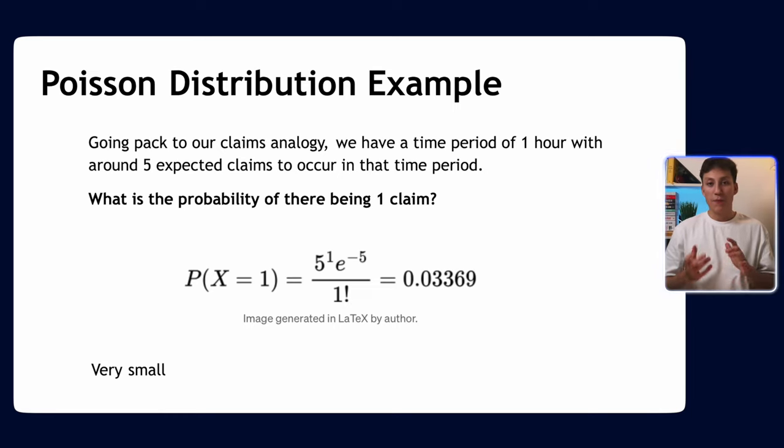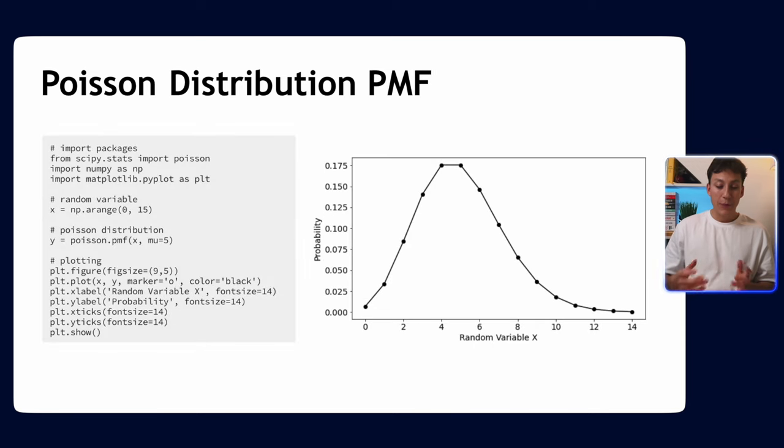Given we have a mean rate of five, to only get one is very unlikely. That's what the Poisson distribution is saying—how likely is a certain number of events going to happen if we know it happens with a mean rate. That's the main gist of the Poisson distribution.